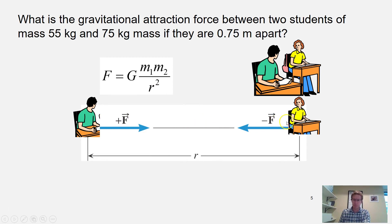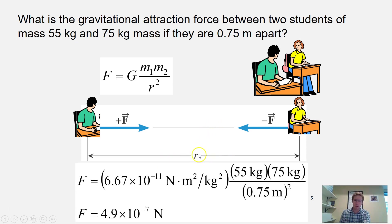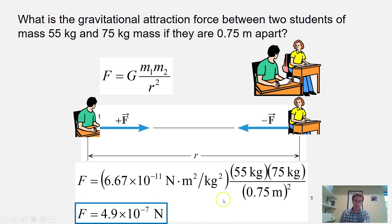Newton's third law tells us the force is equal and opposite — both students feel the attractive force toward one another. Keep in mind that the r distance is the distance between the center of mass of your two objects, which is 0.75 meters. Don't divide it in half; r is the full distance between the two objects. Plugging and chugging, the attractive force between the two students is 4.9 times 10 to the negative 7th Newtons — a very small force because of that tiny gravitational constant.